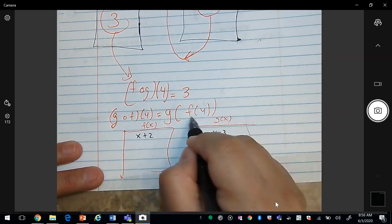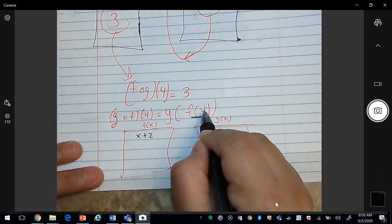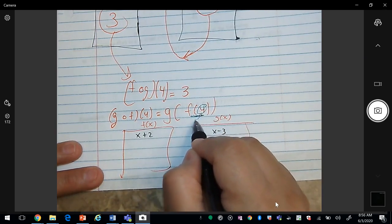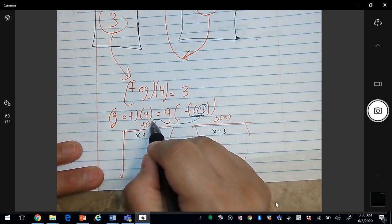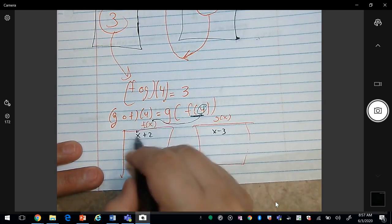So first, we would visit the inside function. So this 4 is going to go to the function f, look for the x, substitute the x with the 4. 4 plus 2 is 6.